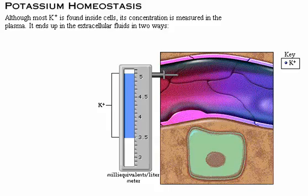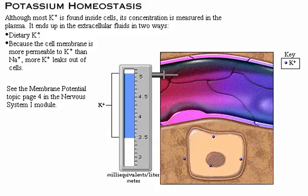Potassium ends up in the extracellular fluids in two ways. Like water and sodium, potassium is constantly entering the body in food and leaving the body mostly through the urine. Because the cell membrane is more permeable to potassium than sodium, more potassium leaks out of cells.